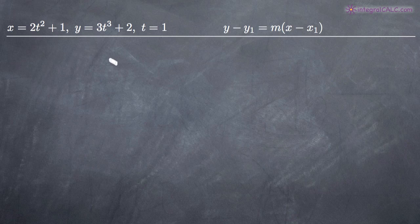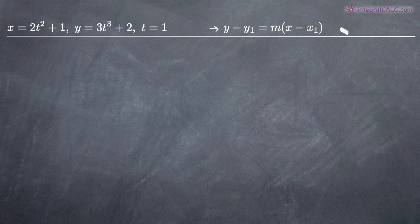Remember that t is the parameter in this equation — that's what makes it a parametric curve. We've been asked to find the equation of the tangent line at t equals 1, and I've written the formula for the tangent line over here. Notice that we need to find two pieces of information: the slope of the tangent line, m, and a point on the graph, which is the coordinate point (x1, y1).